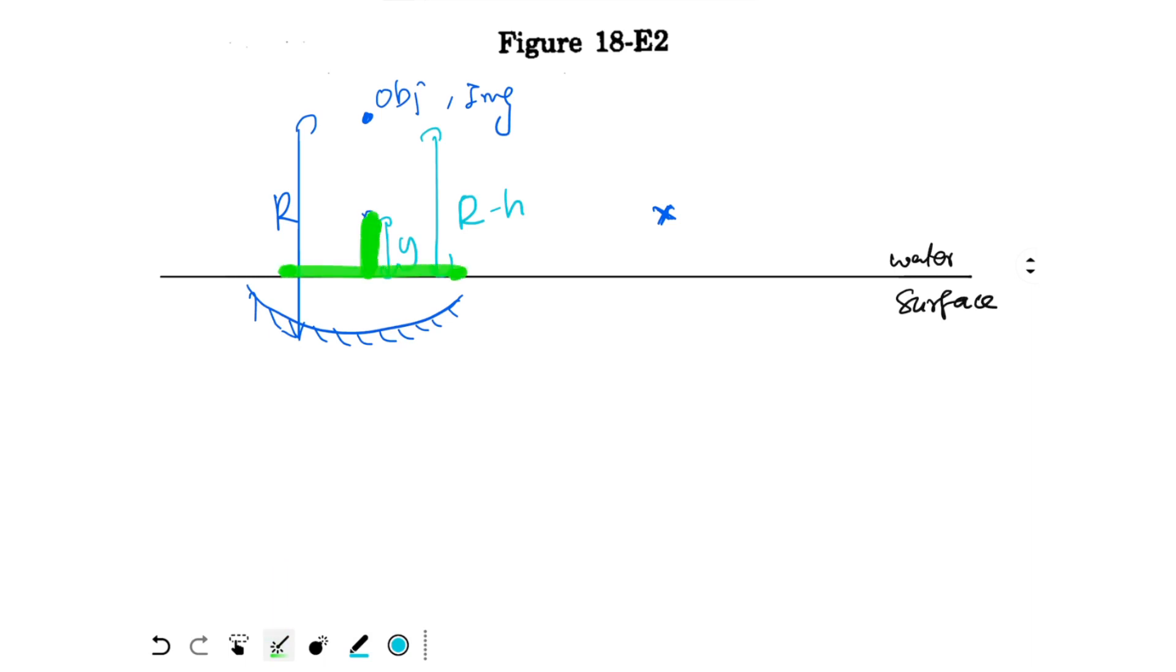If this is y, this is r minus h. So this is the actual distance of object from the surface of water, and this is the apparent distance of object from the surface of water when viewed from underwater. For example, if I draw over here, this is y, this is r minus h, and when viewing from underwater, although the object is kept over here, to the person who is underwater the image will appear to be forming over here. So this is the apparent depth, this is the actual depth. In this case, y by r minus h will be equal to 1 by μ, and μ is the refractive index of water.